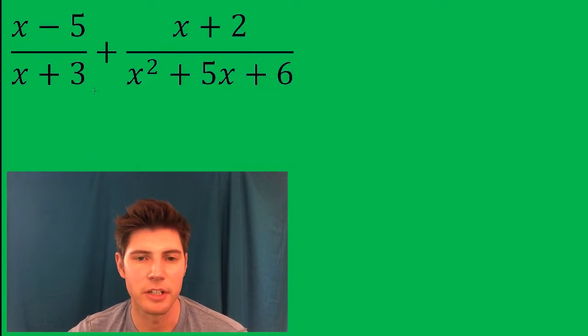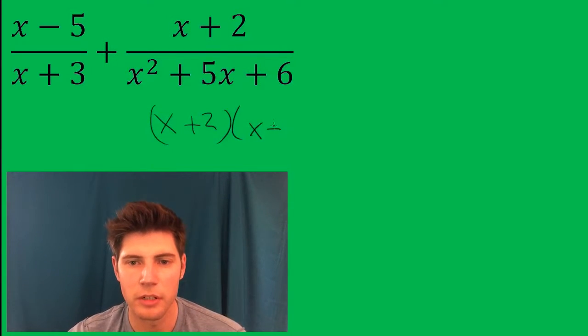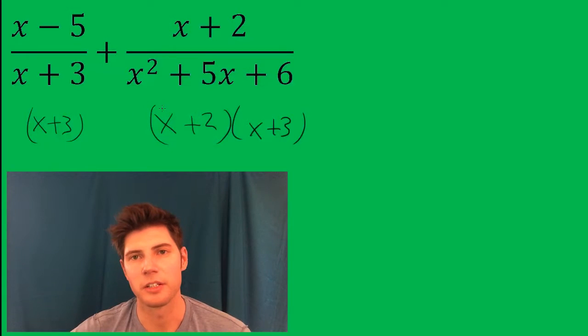So the common denominator here, well we have to factor this first to find out. This factors into (x + 2)(x + 3). And since this one has an (x + 3), we know the common denominator is going to be (x + 2)(x + 3).